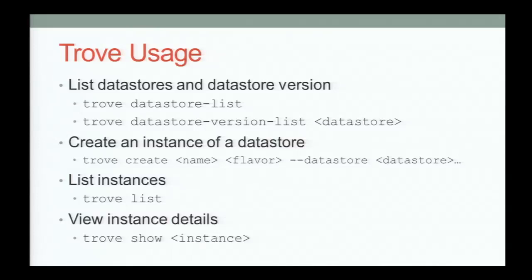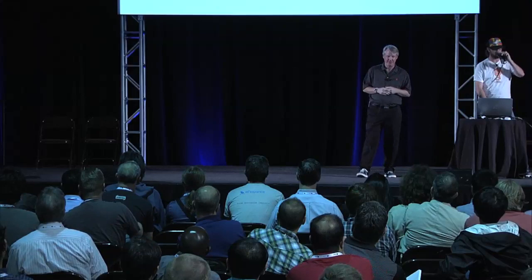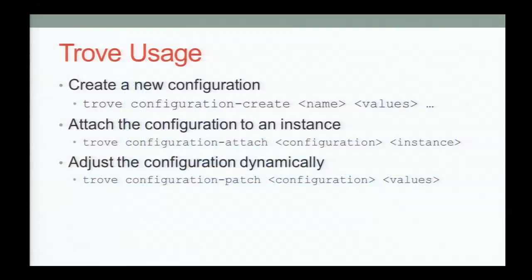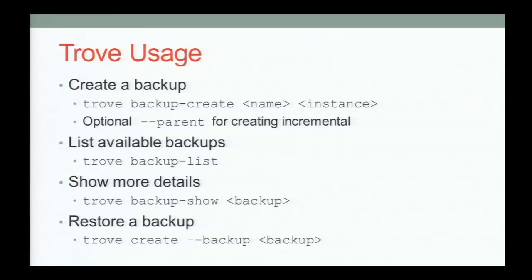From a usage standpoint, once everything's running, these would be user-land commands. You can do trove datastore-list and datastore-version-list to see what databases and versions you can create instances from. Then trove create to create an instance — specify a name, flavor, and parameters like datastore MySQL version 5.5. To list instances there's trove list, and trove show gives you more details. To create a configuration group, you do trove configuration-create, specify a name, and the dictionary of values you want to apply. Then trove configuration-attach attaches it to an instance.